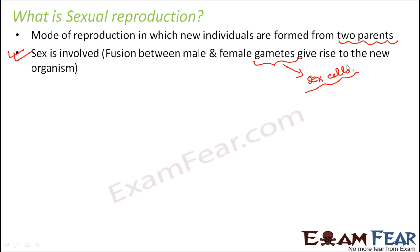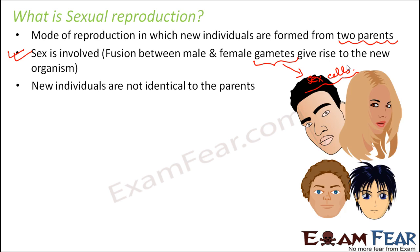You cannot think of sexual reproduction with just one parent — you obviously need two parents. In sexual reproduction, the new individuals are not exactly identical to the parents, however they might have certain resemblances with the parents. For instance, think of yourself: do you look exactly like your mom or exactly like your dad? Maybe your eyes are similar to your mother, your nose is similar to your mother, and your hair is similar to your mother.